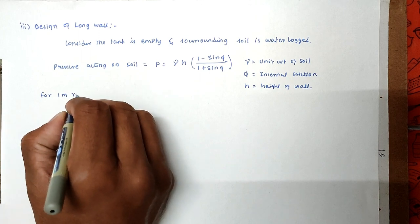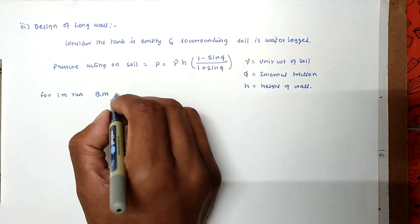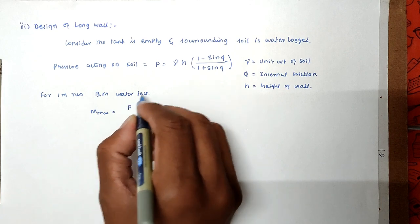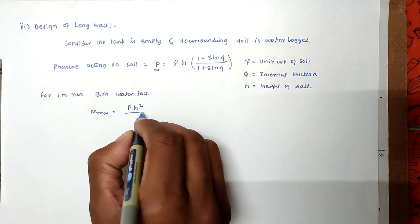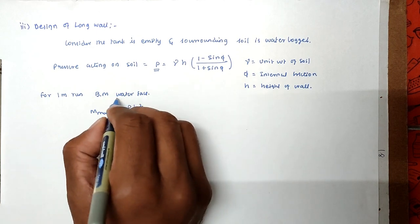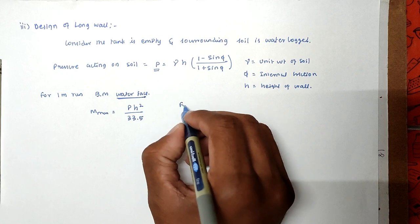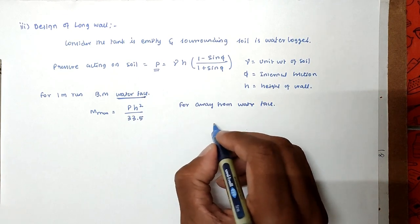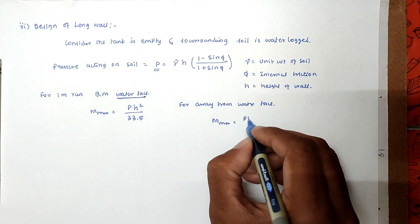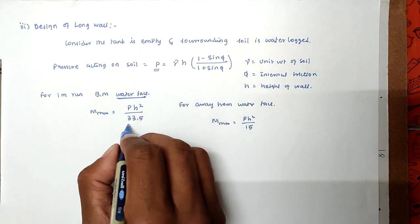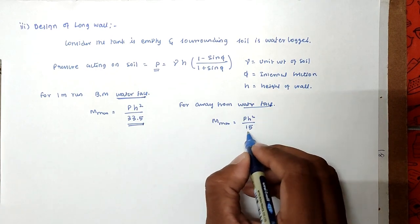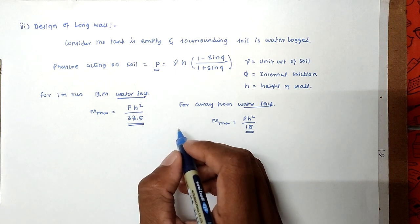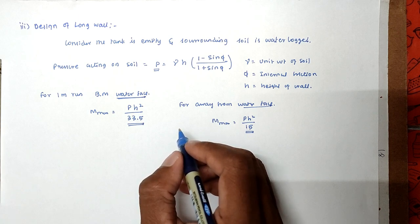The bending moment is calculated in the water phase. M max is equal to P H squared divided by 33.5 for the water phase. For the face away from the water, M max is equal to P H squared divided by 15. From these we calculate the maximum bending moments. From the maximum bending moment, the thickness of the wall is determined by cracking consideration, using the sigma CT value.